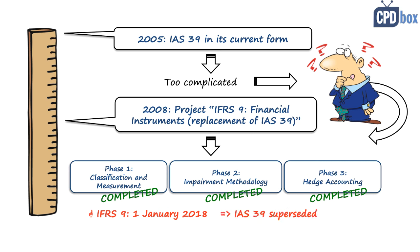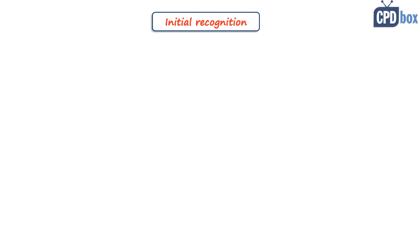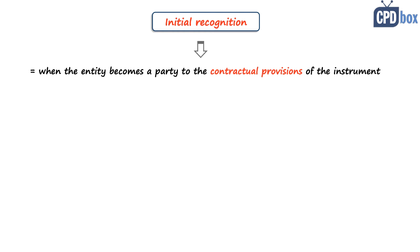Now let's go through the main topics covered by IFRS 9. The first one is initial recognition of financial instruments — or when to recognize financial instruments in the financial statements. A financial instrument should be recognized in the statement of financial position when the entity becomes a party to the contractual provisions of the instrument.